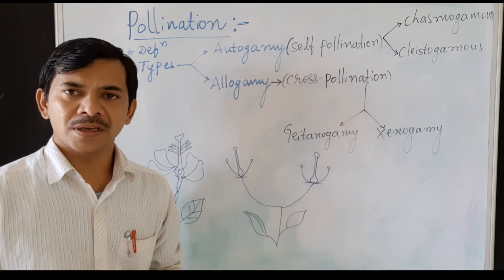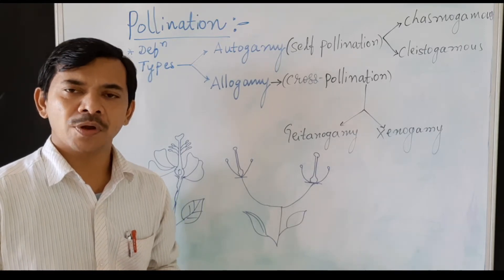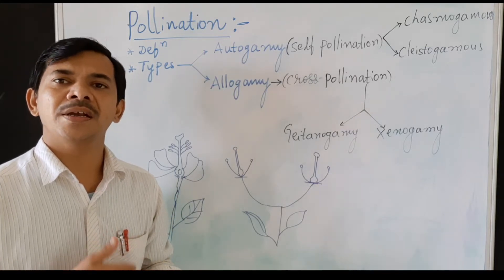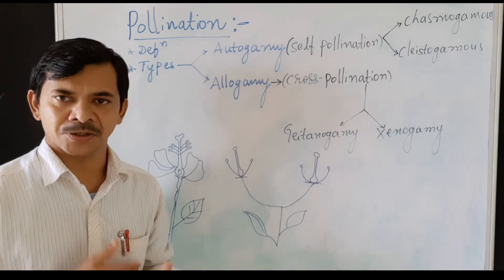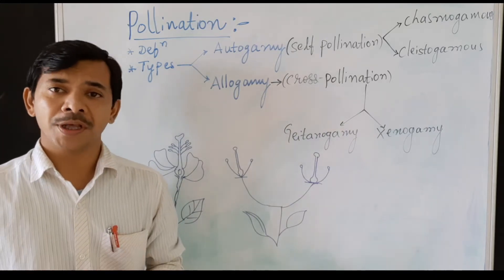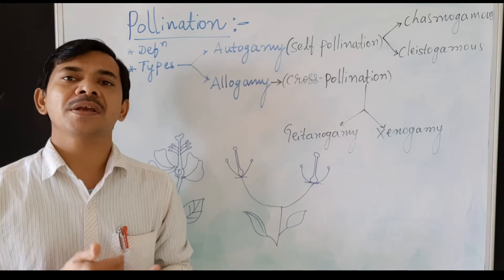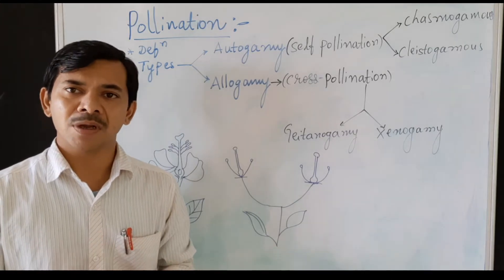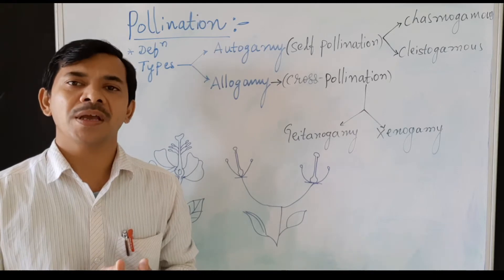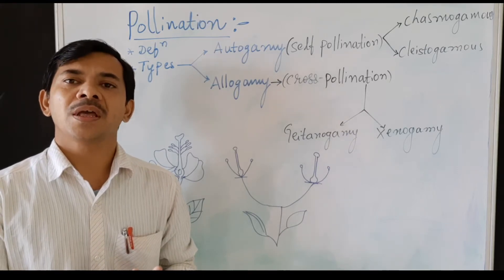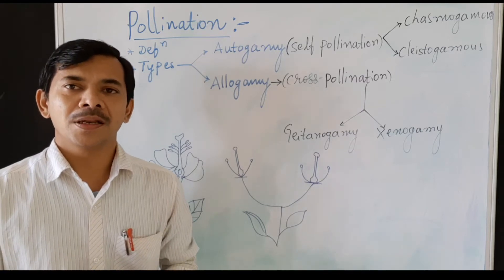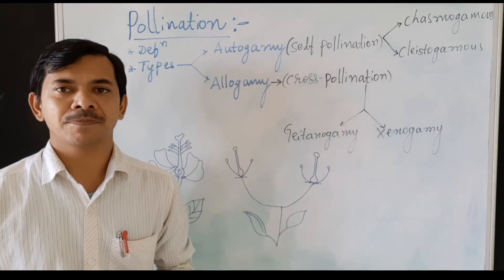To carry out the pollination process, pollen grains and the gynoecium are very essential. Pollen grains are the male gametes, borne in the anther, and the female gamete is the gynoecium, which develops within the ovary. These two are very essential for achieving the pollination process.